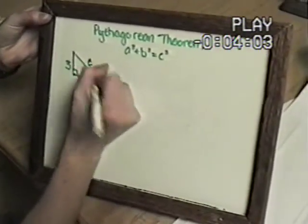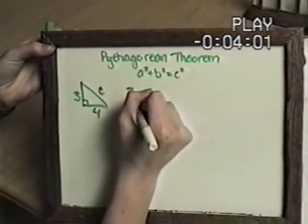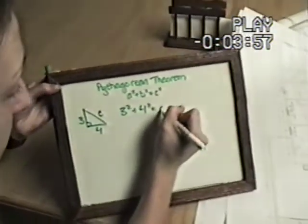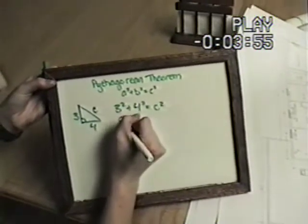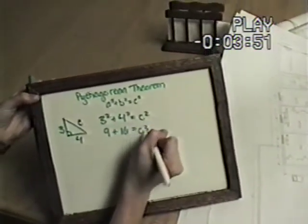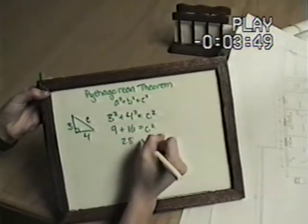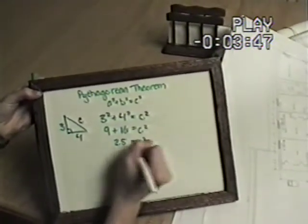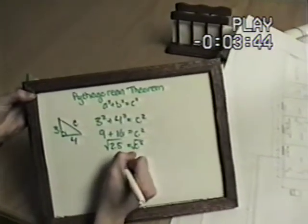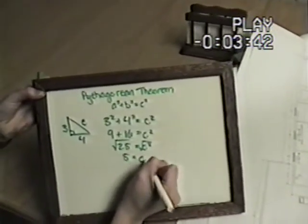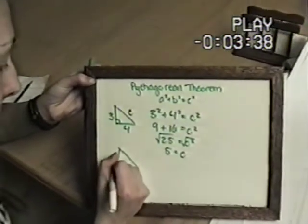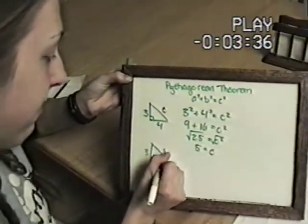And then you have c. How you use it is you do 3 squared plus 4 squared equals c squared, which equals 9 plus 16 equals c squared, which is 25 equals c squared. Take the square root, and you get 5 equals c. So the dimensions are 3, 4, and 5.